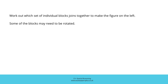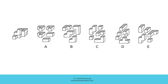Now you can try a second, similar question. Remember, work out which set of individual blocks joins together to make the figure on the left. Some of the blocks may need to be rotated. You're going to consider this figure and think about how that figure has been constructed. The right combination of blocks is represented by one of the five answer options. Pause the video and try to work out which combination of blocks could be put together to create the figure. You should try to do that within 30 seconds. When you've finished working, resume the video and we'll check the answer together.